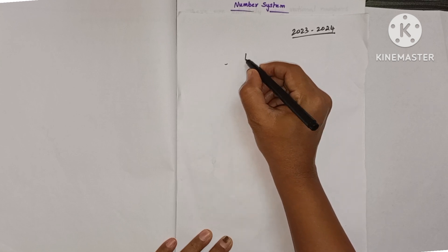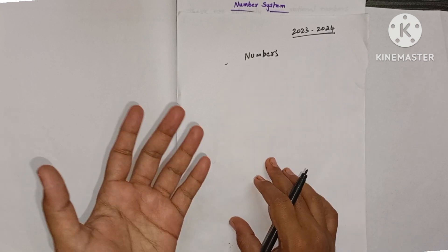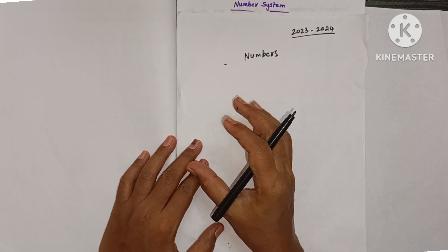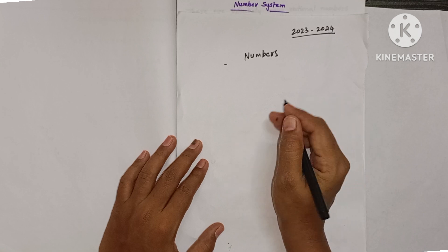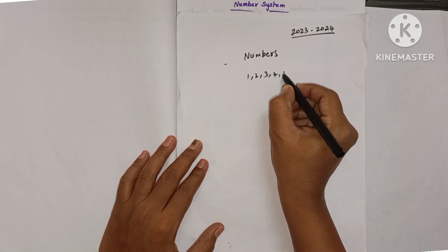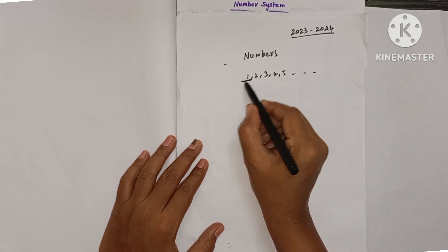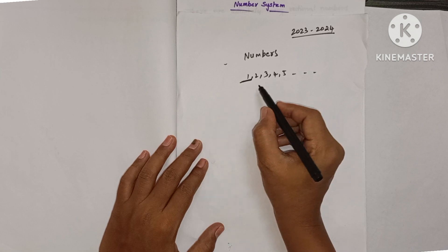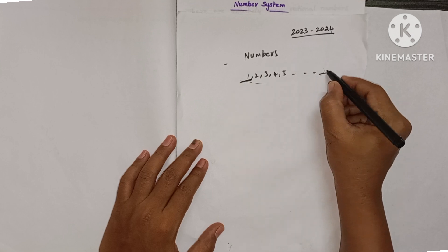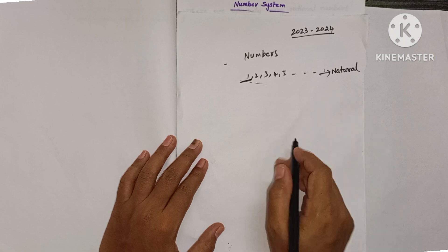Maths is all about numbers — there are different types of numbers. Suppose somebody gives you some chocolates; how do you count them? One, two, three, four, five and so on. You start counting from one, so these counting numbers are called natural numbers.